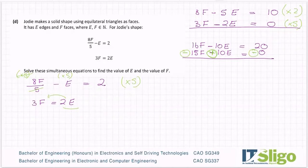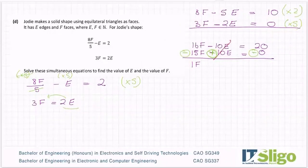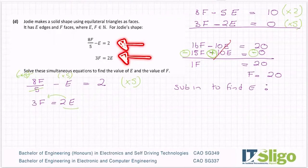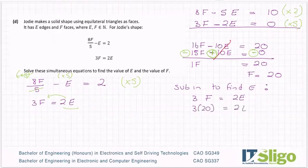Then adding: 16F minus 15F gives 1F. Minus 10E plus 10E cancels, which is exactly what we wanted. And 20 minus 0 is 20. So F equals 20. Then substitute in to find E — I'll use the second equation, 3F equals 2E. I now know F is 20, so 3 times 20 is 60 equals 2E. Divide across by 2, so E equals 30.